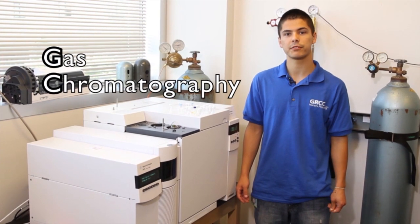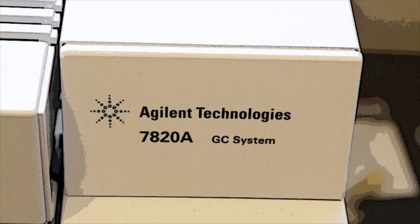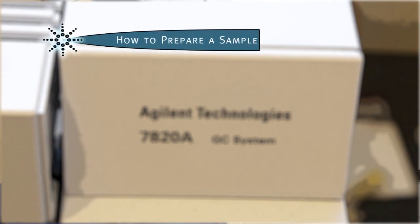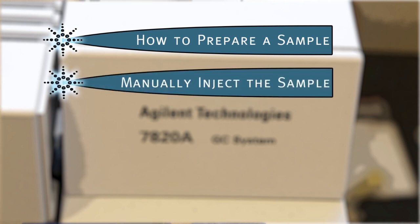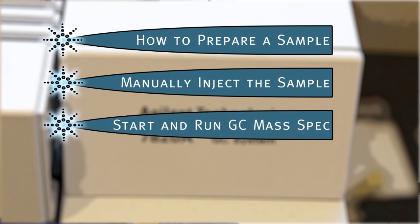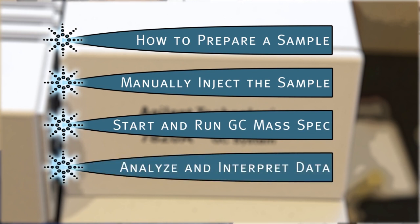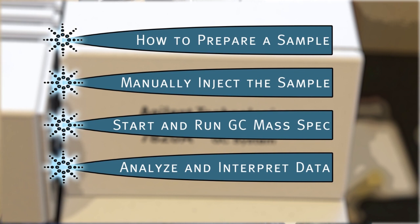Hello, my name is Corbin and today I'll be showing you GC MassSpec, which stands for Gas Chromatography Mass Spectroscopy. Today I'll be covering how to prepare a sample to run through the GC MassSpec, how to inject a sample, how to start the GC MassSpec, and I'll show you the program to do that. The final thing will be to analyze and interpret your data, because that's the most important thing — you want to know what the sample is that you've just prepared.